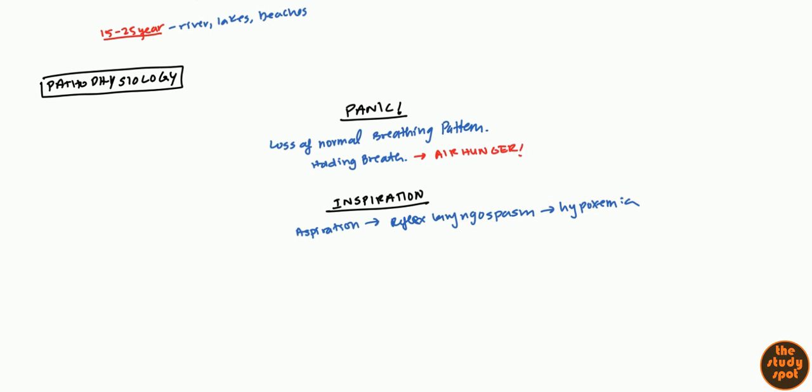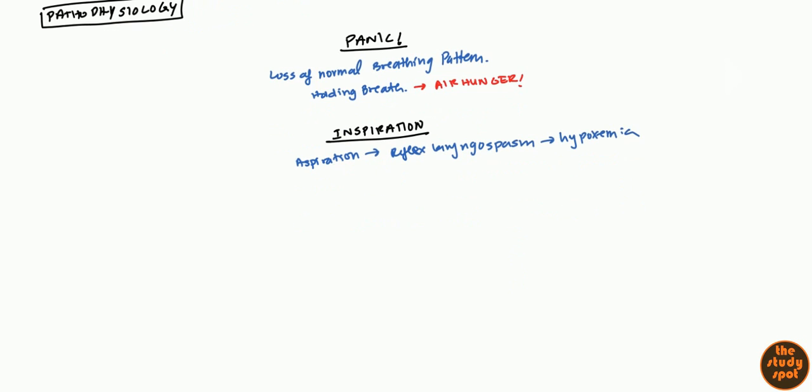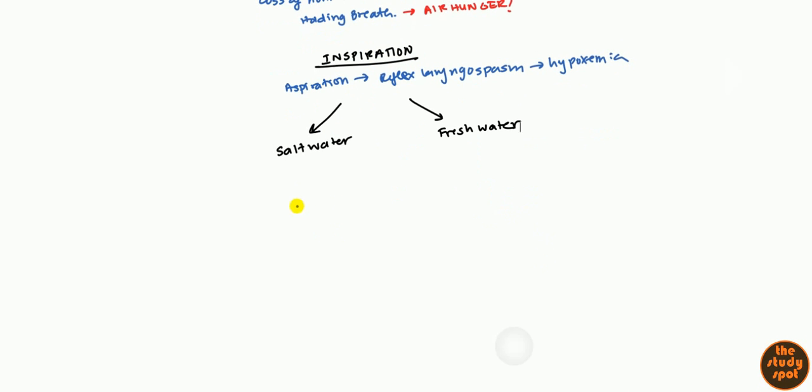Now, if you look at the text, they do separate different types of water. So one type of water is going to be salt water that someone can aspirate, and then the other type of water is fresh water. So the difference between these two is obviously the osmolality. So obviously salt water has more electrolytes and fresh water has less electrolytes.